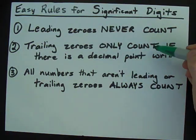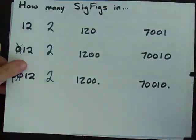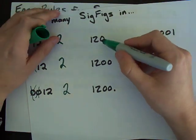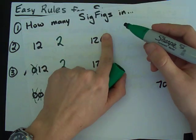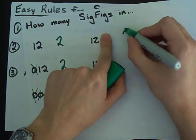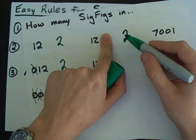Trailing zeros only count if there's a decimal point. So, this has a trailing zero and no decimal point. So, it doesn't count as significant. There are only two significant figures here.